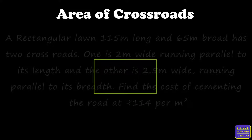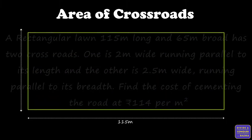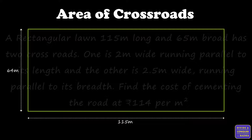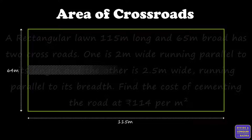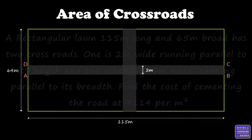The dimensions of the rectangular lawn are: length 115 meters and breadth 64 meters. There are two crossroads. Crossroad one runs parallel to its length — let's name it ABCD, and its width is 2 meters. Another crossroad runs parallel to its breadth — let's label it PQRS, and the width of crossroad 2 is 2.5 meters.